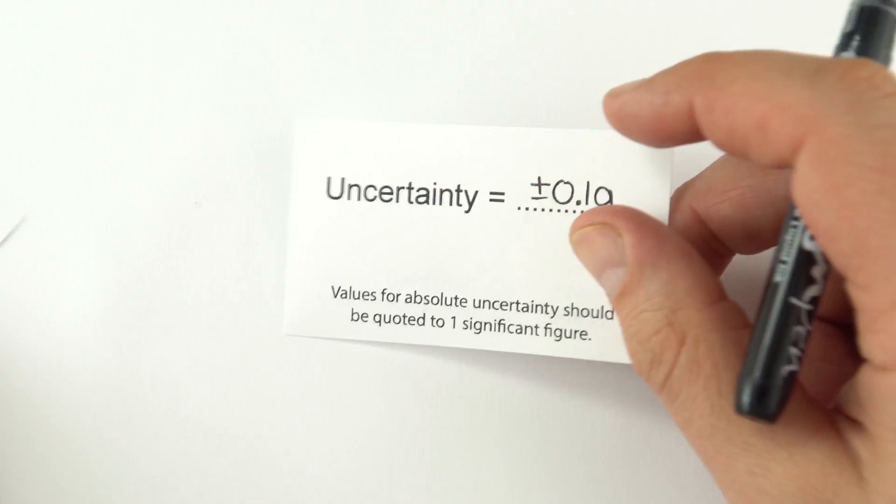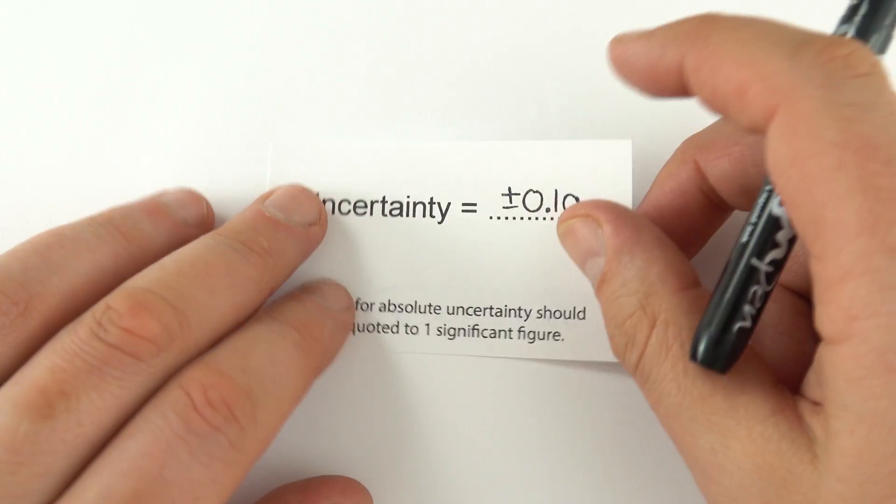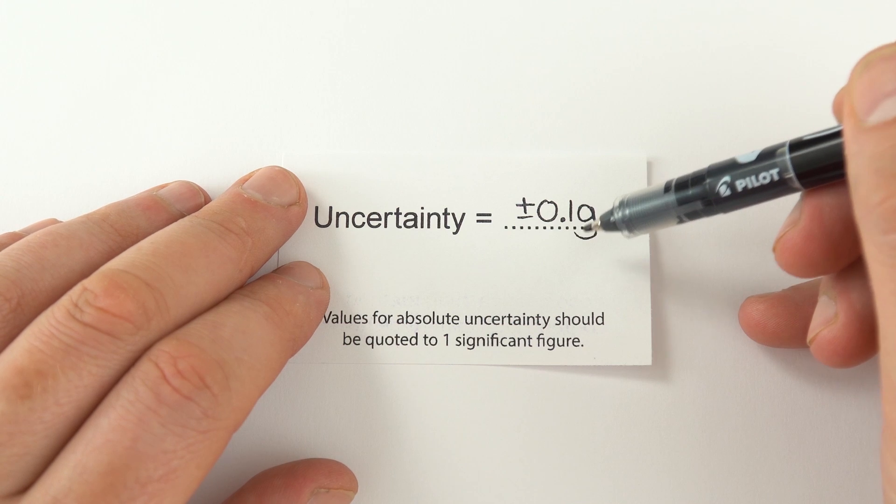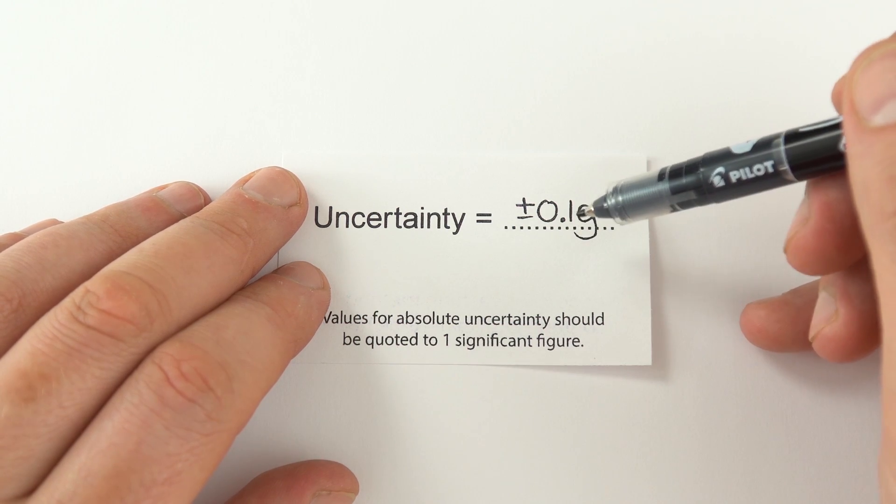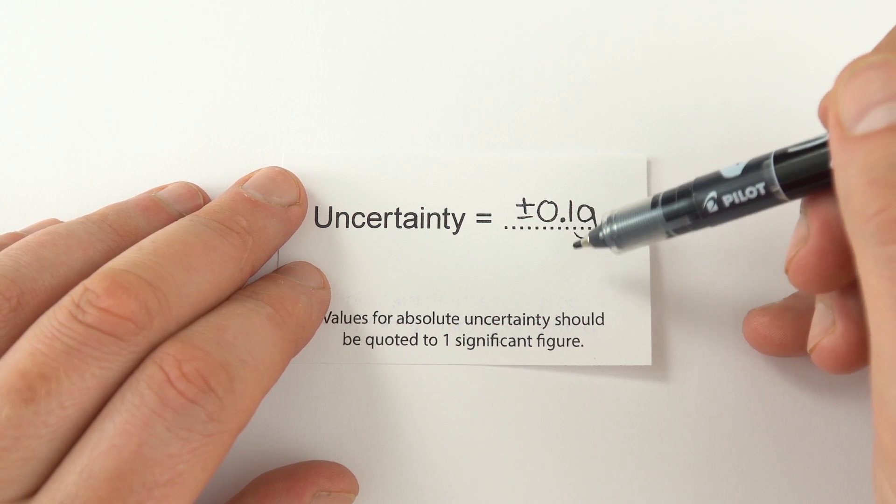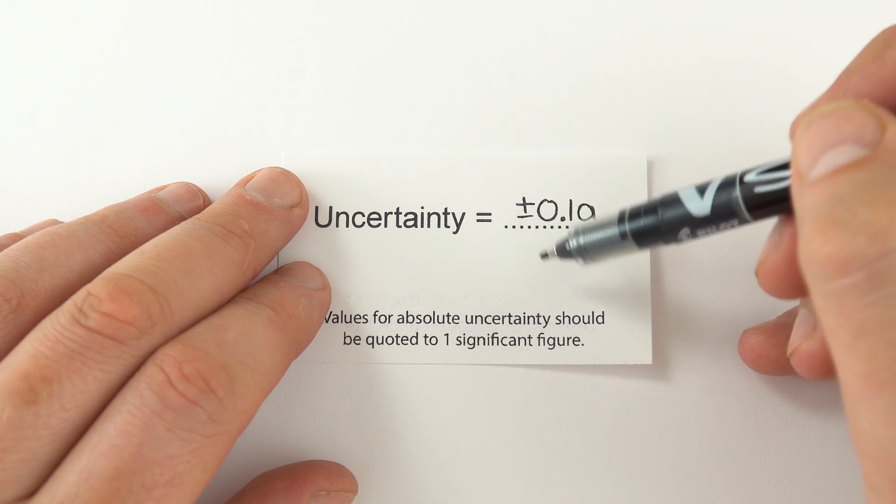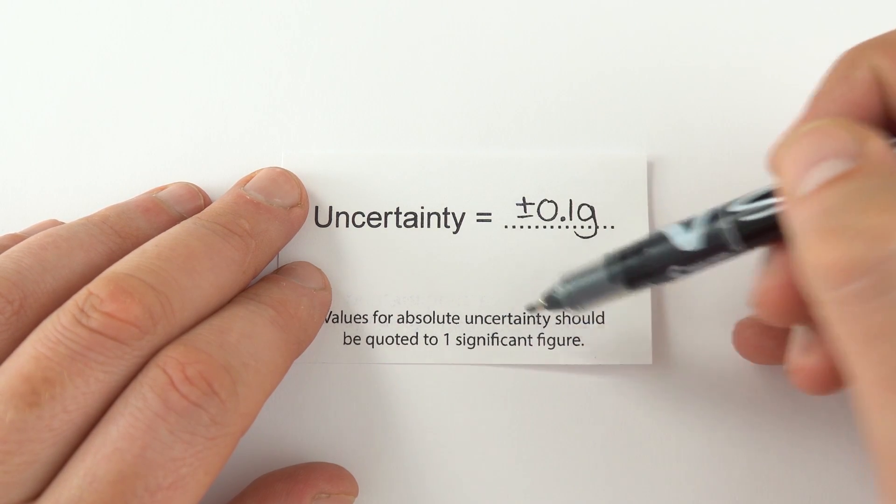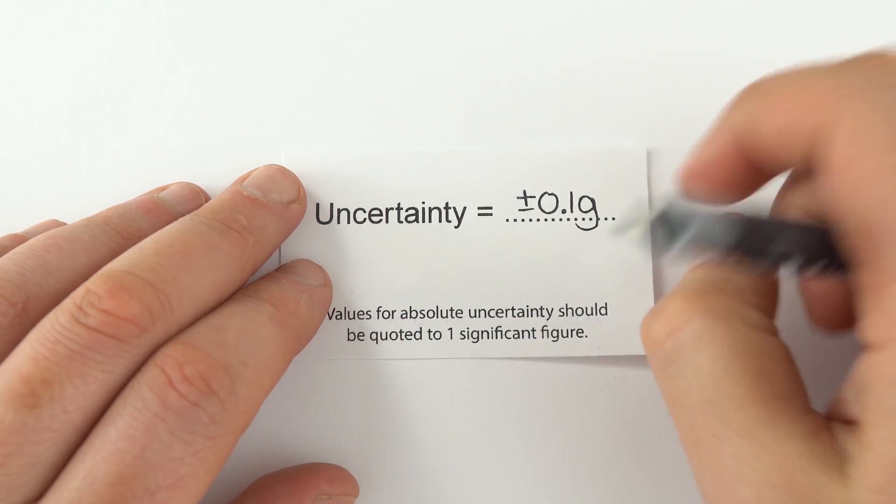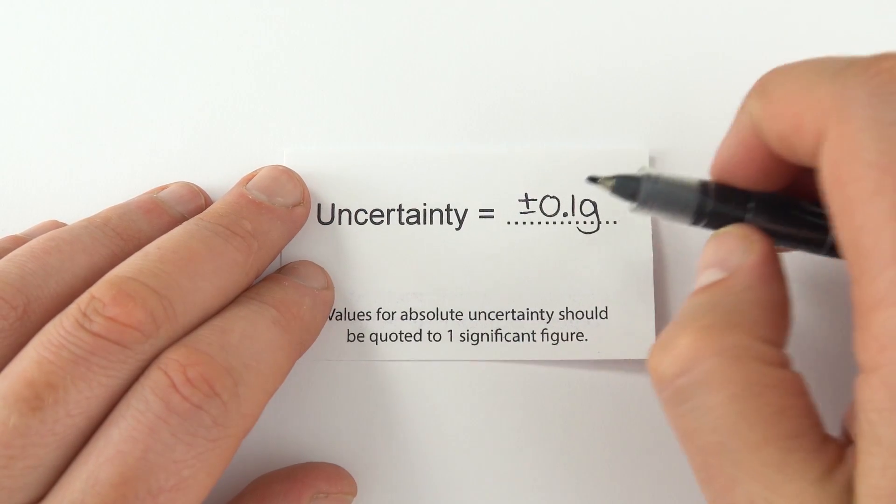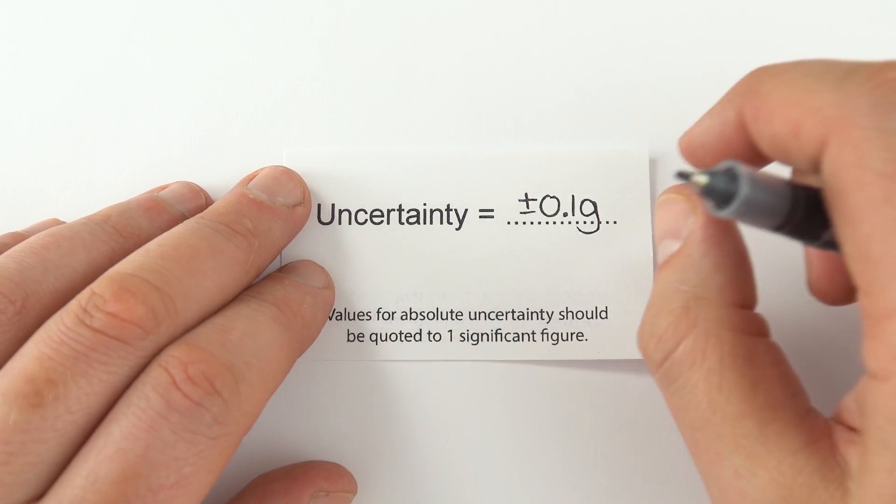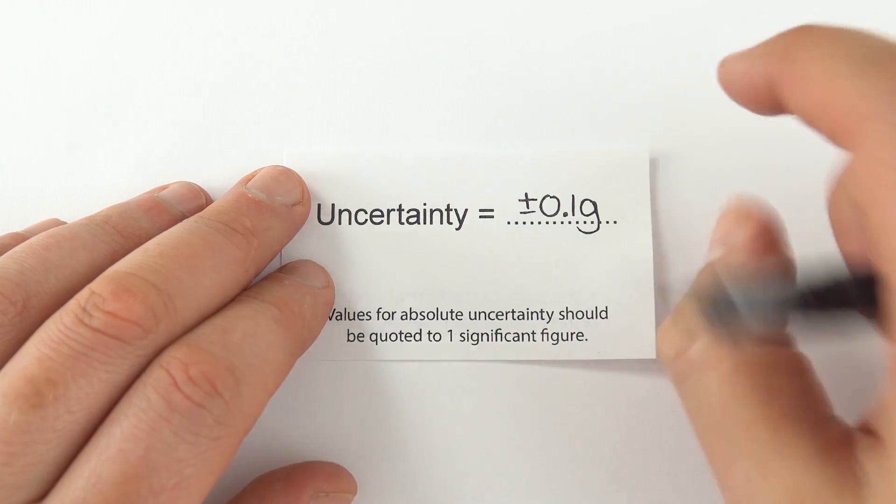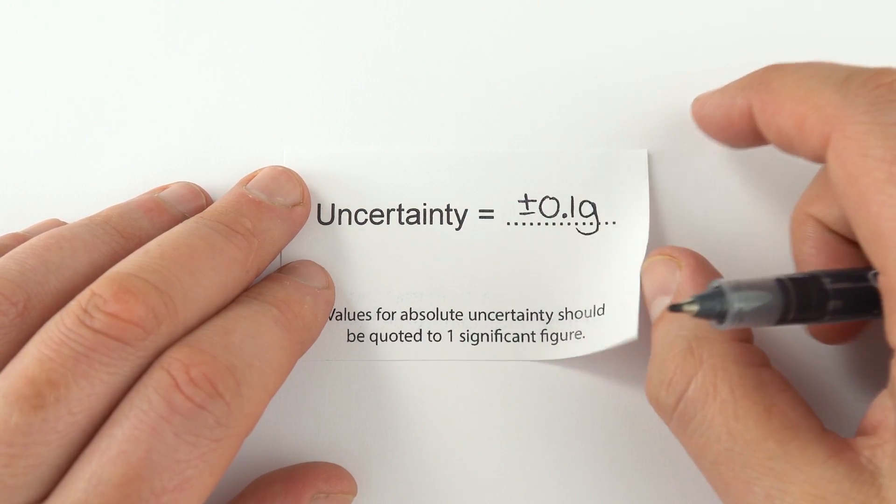The other thing is about uncertainty. This is a difficult, tricky area. But basically, if you've got the absolute uncertainty in a value, maybe you're measuring the mass of something using a mass balance, it says here for OCR in particular that for absolute uncertainty it should be quoted to one significant figure. That's something which I didn't know, actually, but I think it's useful to remember. Values for absolute uncertainty should be quoted to one significant figure. This is the advice that OCR have.